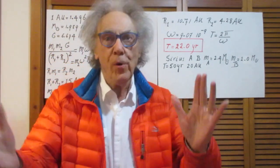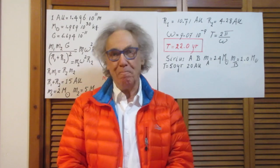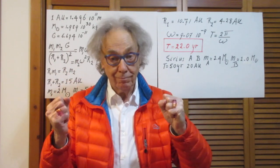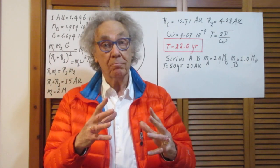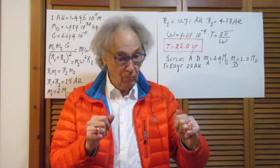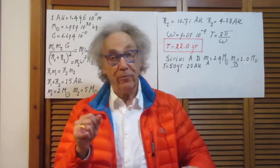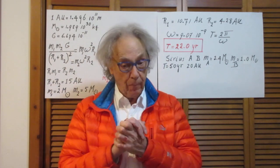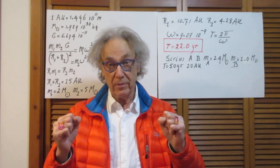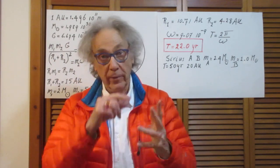Hello. Binary star system: two stars going around their common center of mass. One has a mass twice that of the Sun, the other five times that of the Sun, and they are separated by 15 astronomical units. The question is, what is the orbital period?